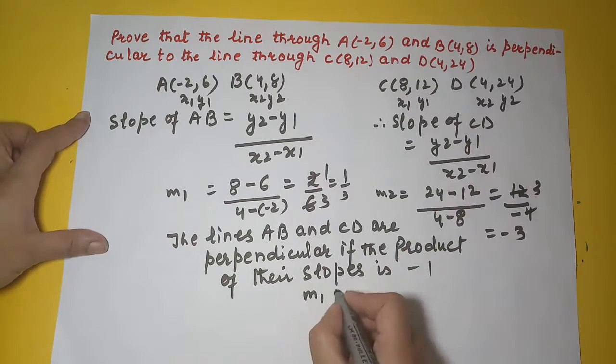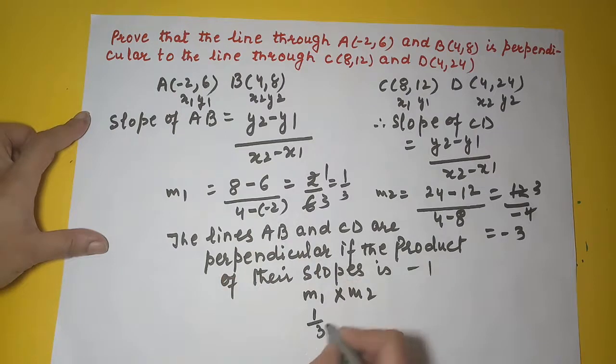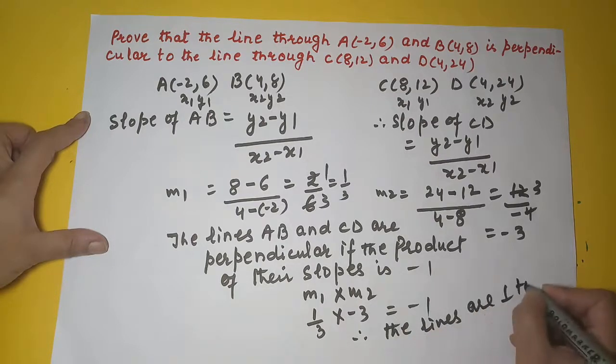So let's name this as m1 and this slope as m2. Now let's multiply m1 and m2 to check whether we are getting minus 1 or not. 1 by 3 into minus 3 is equal to minus 1. Therefore, the lines are perpendicular to each other.